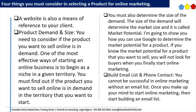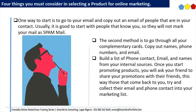Thing 4: Build an email list and phone contact. You cannot be successful in online marketing without an email list. Once you make up your mind to start online marketing, start building an email list. One way to start is to go to your email and copy out the emails of people in your contacts — it is good to start with people that know you so they will not mark your mail as spam. The second method is to go through all your complimentary cards, copy out names, phone numbers, and emails. Build a list of phone contacts, emails, and names from your internal sources. Once you start promoting products, ask your friends to share your promotions with their friends, and try to collect the email and phone contacts of those who respond into your marketing list.